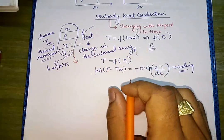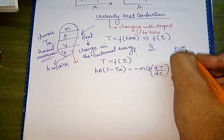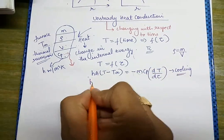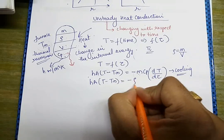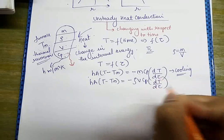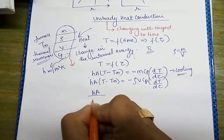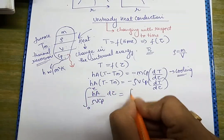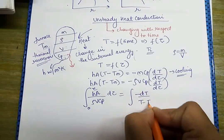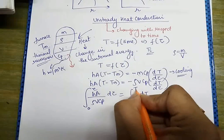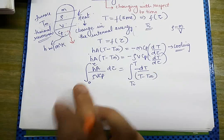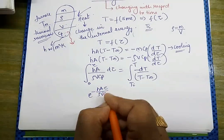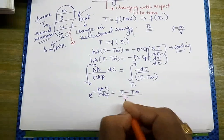Now we separate variables. Since density ρ = mass/volume, we replace mass: h·A·(T − T_infinity) = −ρ·V·Cp·(dT/dτ). Separating variables: (h·A / ρ·V·Cp)·dτ integrated from 0 to τ equals −dT/(T − T_infinity) integrated from Ti to T. After solving, we obtain: e^(−h·A·τ / ρ·V·Cp) = (T − T_infinity) / (Ti − T_infinity).